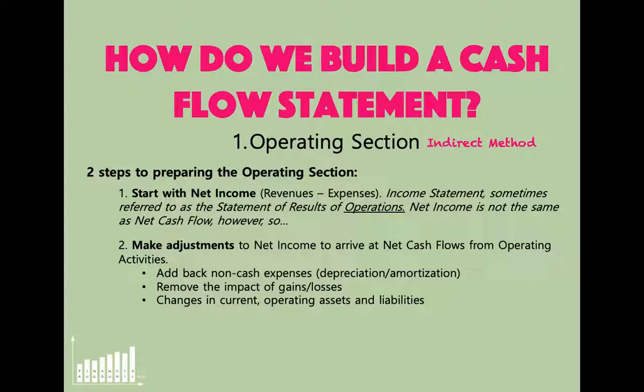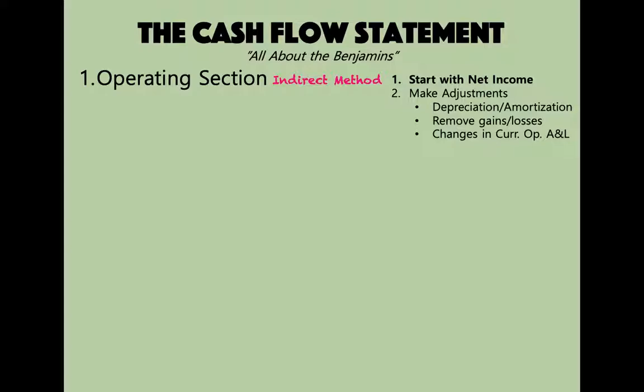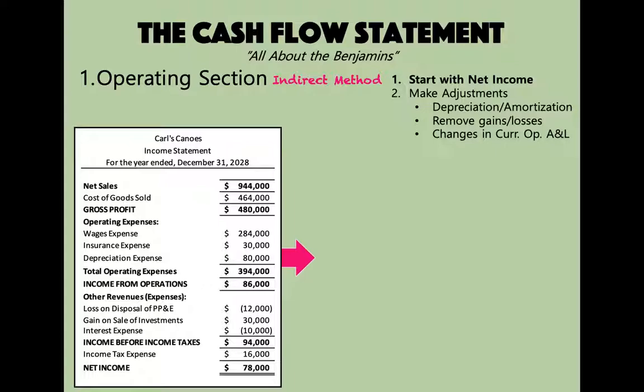We're going to look at a situation for Carl's Canoes. I've made up this information to go along with the illustration used in previous videos. We'll try to build a cash flow statement using this information. Here's the income statement for Carl's Canoes: they had $944,000 in sales and $78,000 in net income.